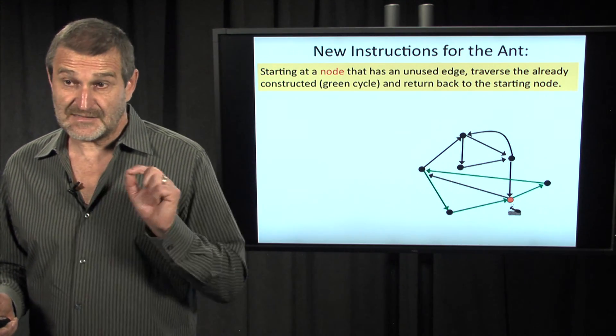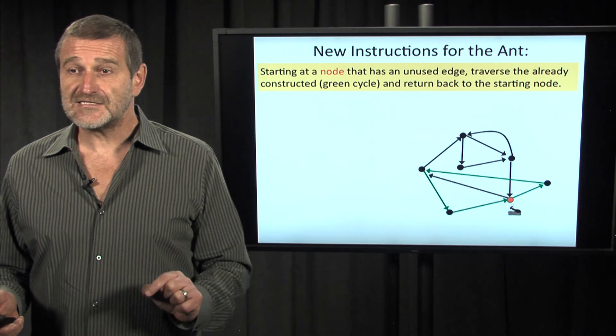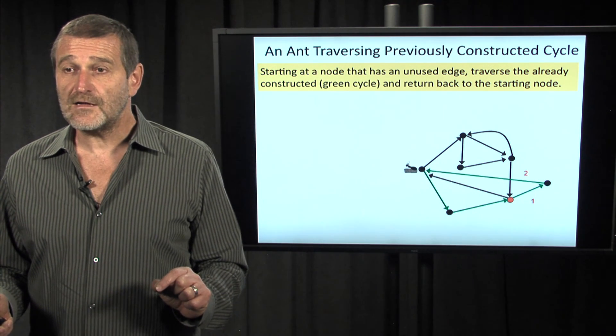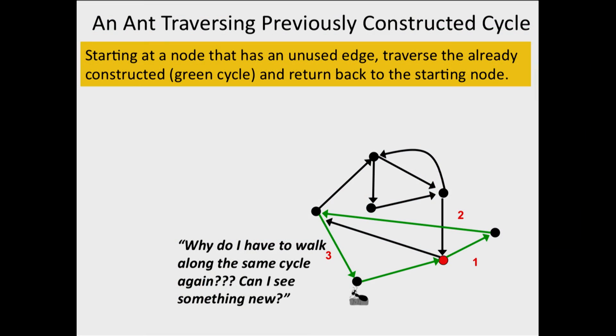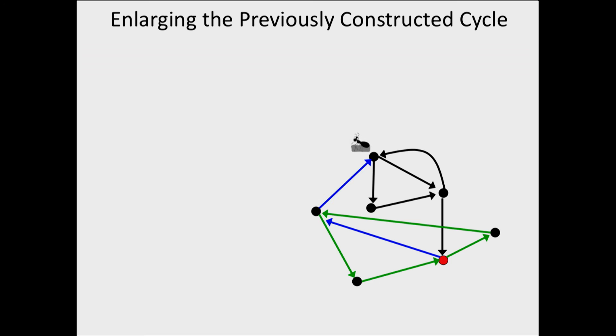In the beginning, let's tell the ant: first, follow the same cycle you constructed at the previous step. So the ant starts walking along the green cycle. The ant absolutely doesn't understand why it has to do this silly work, walking along the cycle it already constructed. But finally it arrives at the initial node, and now it realizes that actually it can continue walking because there are still unexplored edges from this node. The ant continues walking and finally gets stuck—of course at the same node where it started.